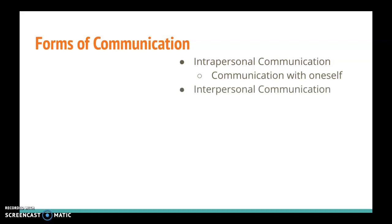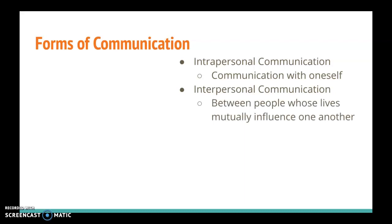Interpersonal communication, on the other hand, is communication that happens between people whose lives mutually influence one another. So this is communication that happens between you and a friend, or you and a family member, you and your partner, those sorts of things. And interpersonal communication can be planned or unplanned, but generally speaking, it is fairly structured, which is influenced by different social expectations. And interpersonal communication can meet relational needs by communicating the uniqueness of that specific relationship. It helps us to not only build those relationships, but maintain them as well. And a lot of times, however, we do see instances of miscommunication or conflict in interpersonal communication.